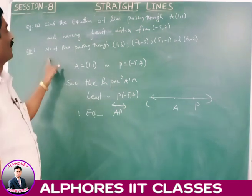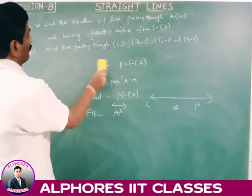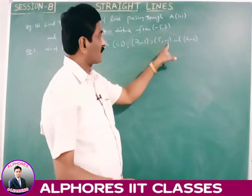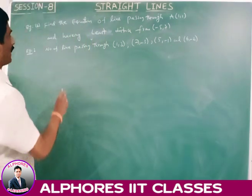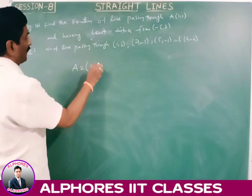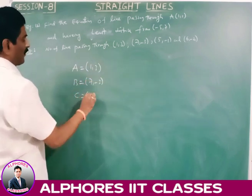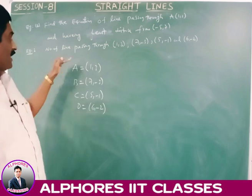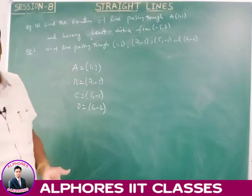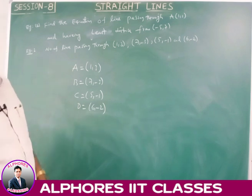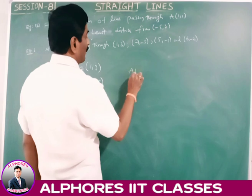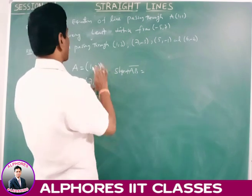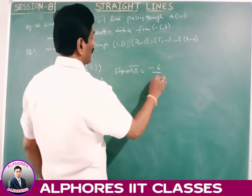Example 3: find the number of lines passing through the points (1, 3), (7, -3), (5, -1), and (6, -2). To find collinearity, compute slopes. Slope of AB = (-3 - 3)/(7 - 1) = -6/6 = -1. Slope of AC = (-1 - 3)/(5 - 1) = -4/4 = -1. Slope of AD = (-2 - 3)/(6 - 1) = -5/5 = -1.